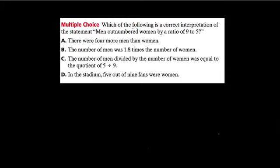Okay, so here we're asked which of the following is a correct interpretation of the statement: men outnumber women by a ratio of 9 to 5. So A says there are 4 more men than women. B, the number of men was 1.8 times the number of women.